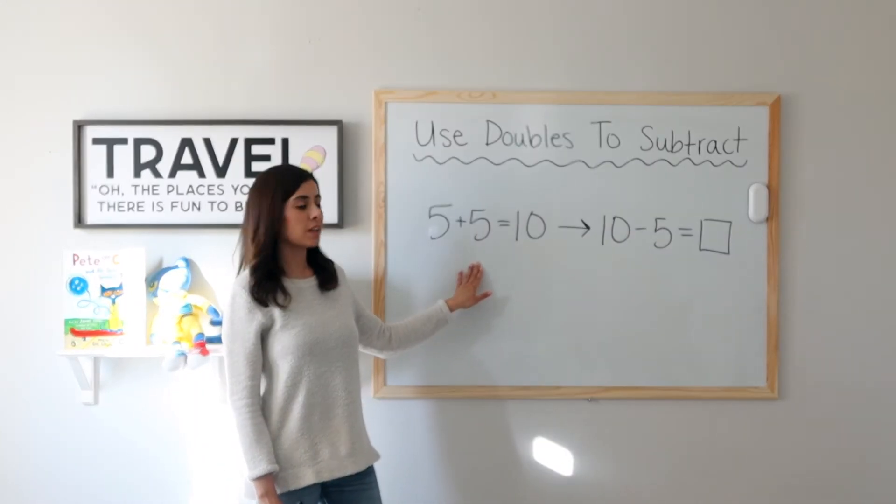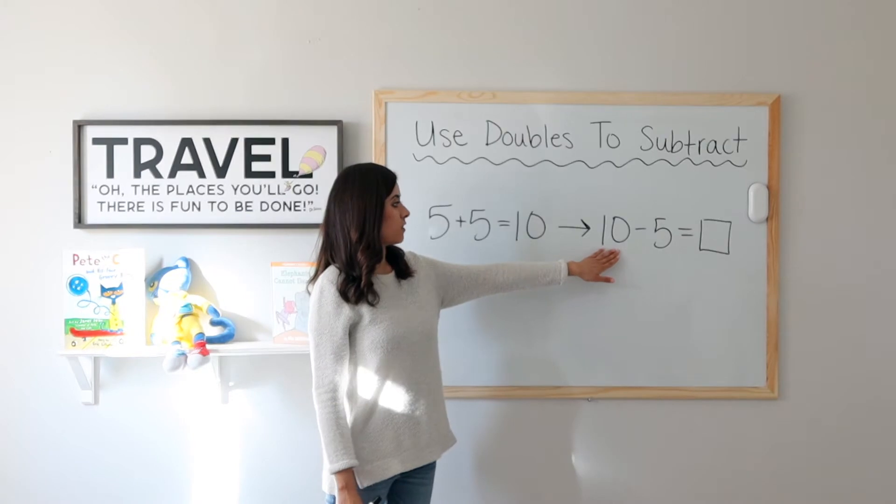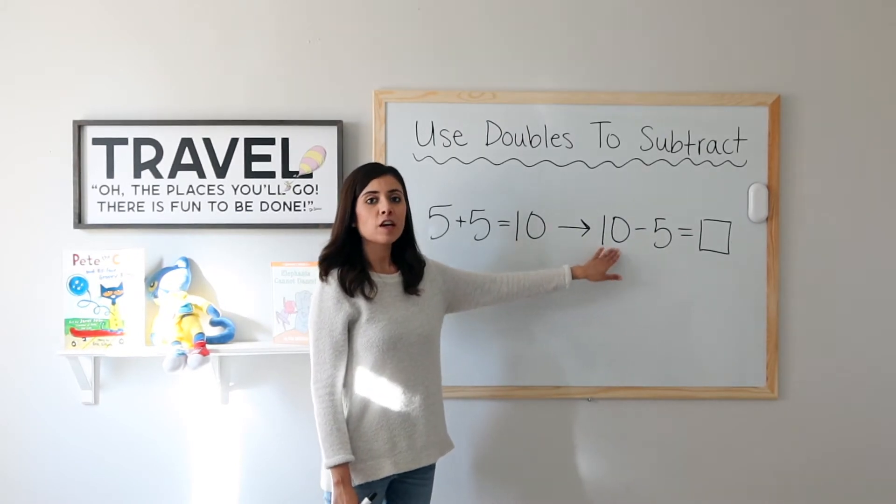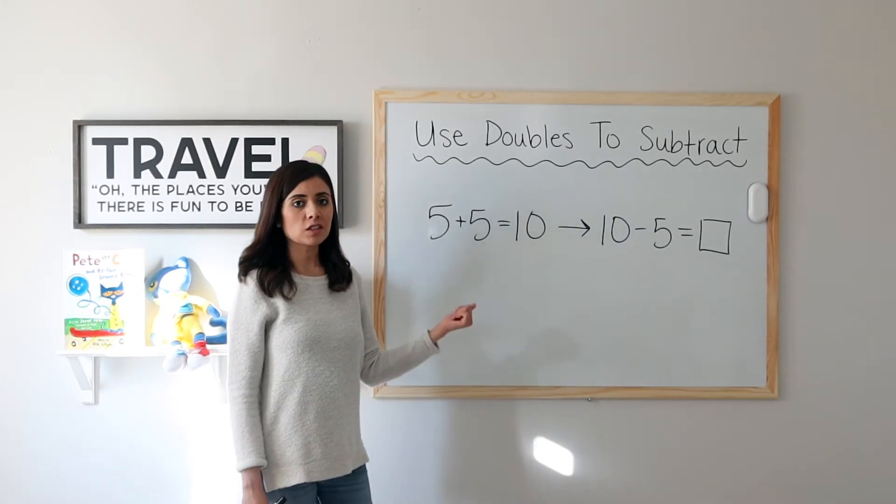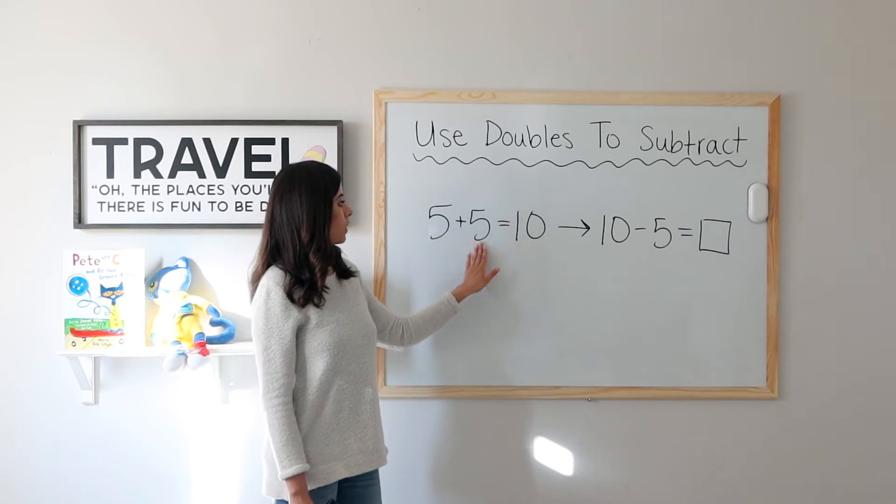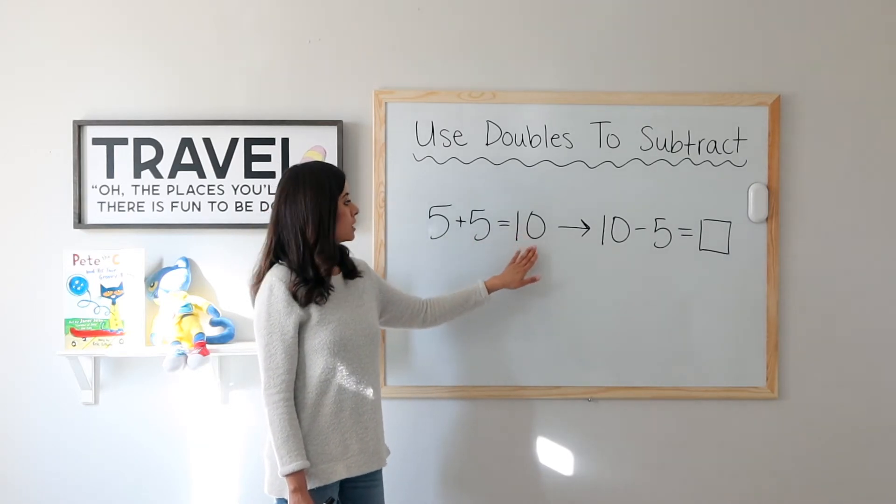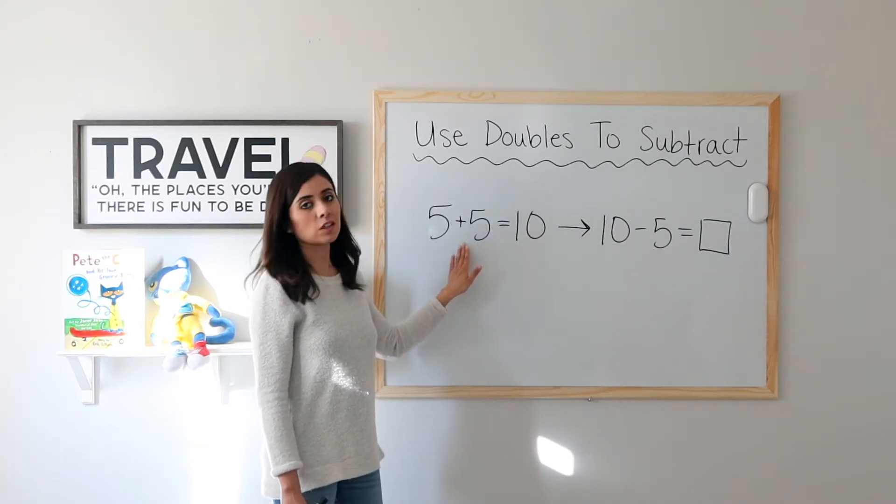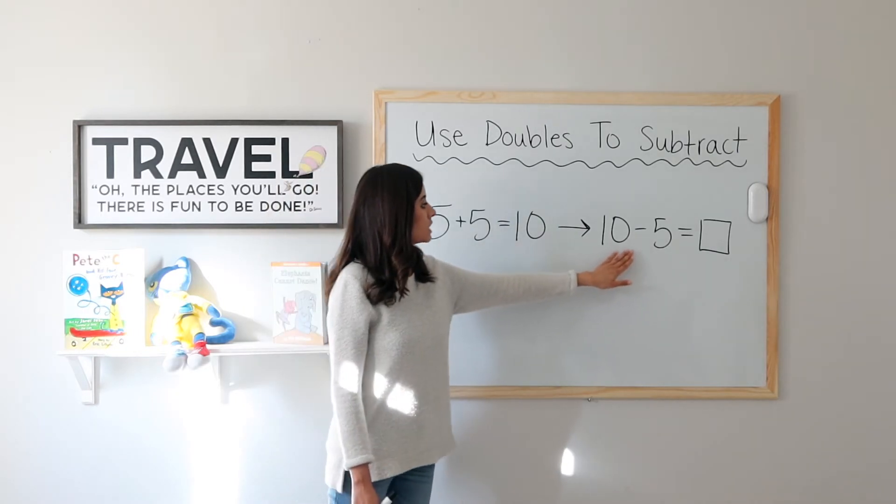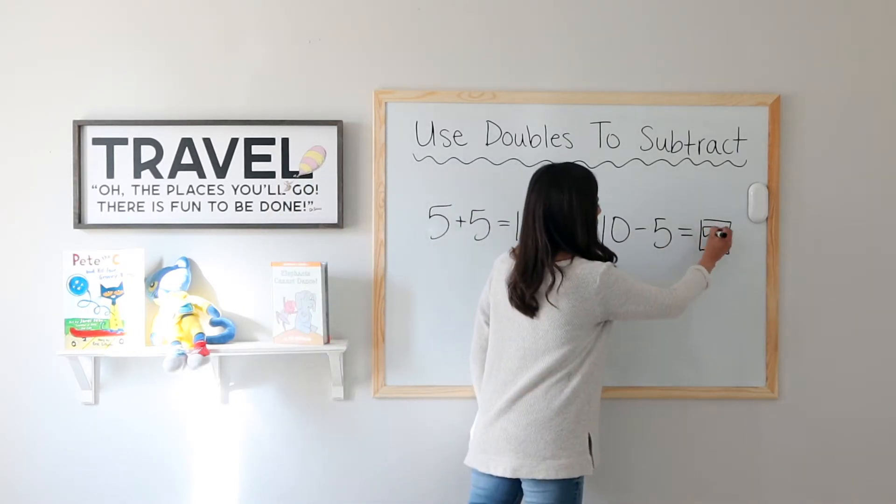5 plus 5 equals 10. I can use this doubles fact to find 10 minus 5 by reading it backwards as a subtraction problem. 5 plus 5 equals 10, so 10 minus 5 equals 5.